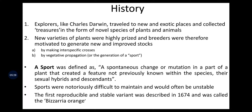Coming to the historical portion of Chimera, the first attempt was done by Charles Darwin — he was the first observer of this phenomenon. He traveled to new and exotic places and collected novel species of plants and animals. New varieties of plants were highly prized and breeders were motivated to generate new and improved stocks. Sports were defined as spontaneous changes or mutations in a part of a plant that created a feature not previously known within the species, but were notoriously difficult to maintain and often unstable.